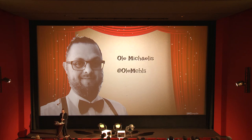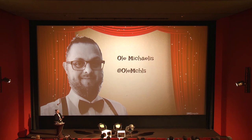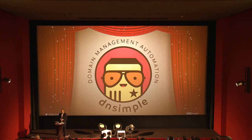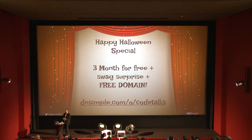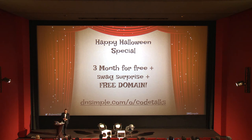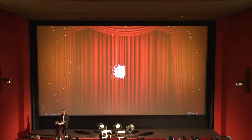That was the brief tour of the Curie Collection of Web Protocols. My name is Ole Michaelis. If you want to follow me on Twitter, it's my first name plus last name minus the vowels — a mathematic Twitter handle. It's the same for the internet: ole.michels.works. I work for a company called DNSimple — we do domain management automation, you can buy and manage your domain through us, we have a wonderful API and user interface. We have a Halloween special: sign up with this link and you'll get three months of free service, a bunch of stickers in your postal mailbox, and a free .com domain. We're giving away 50 .com domains for free for one year if you sign up during the conference.